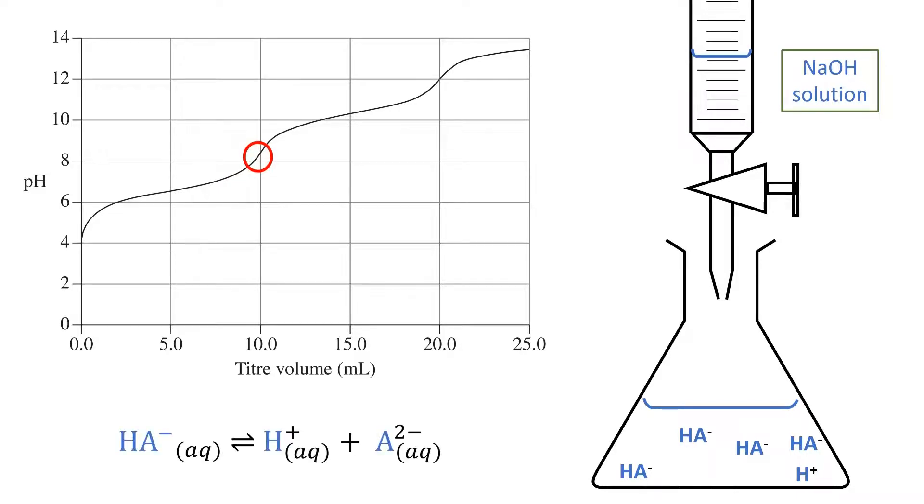Now, we will have a new equilibrium equation in action, and some of the HA- ions will actually be dissociated to H+ and A2- ions.